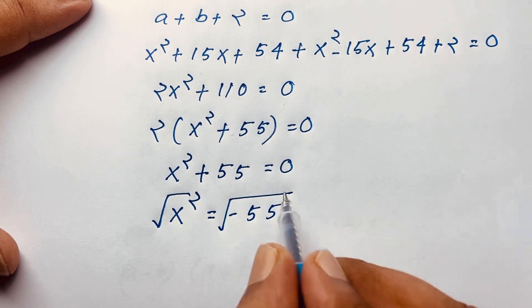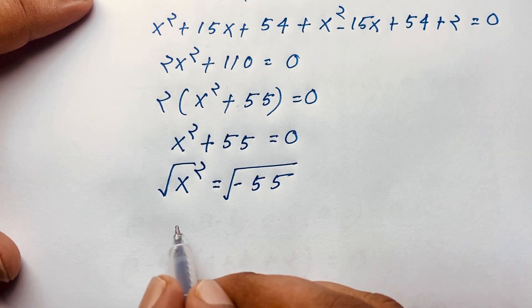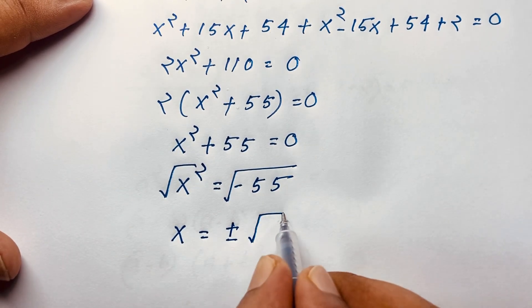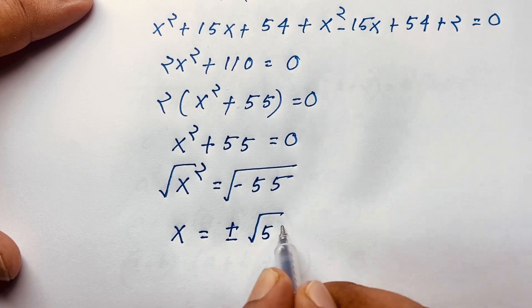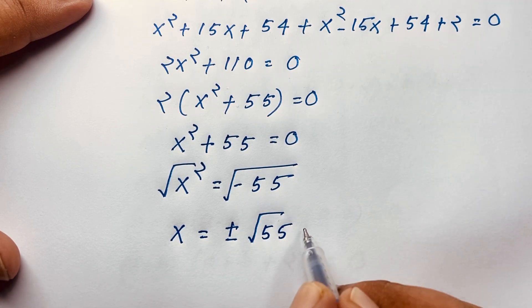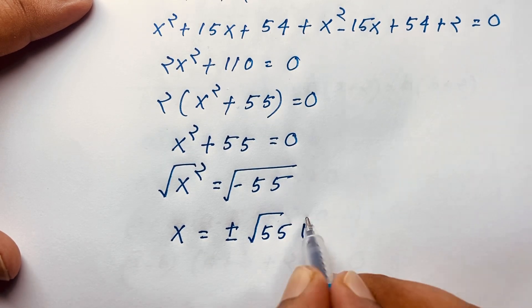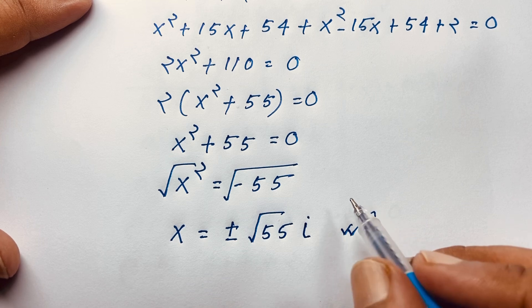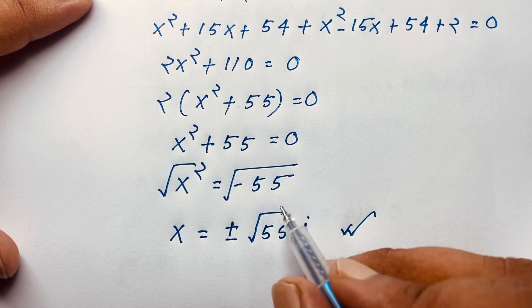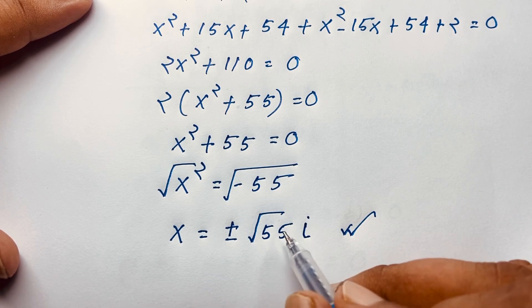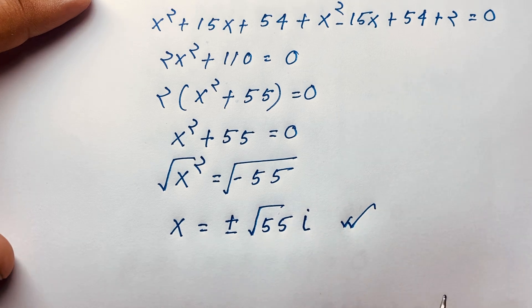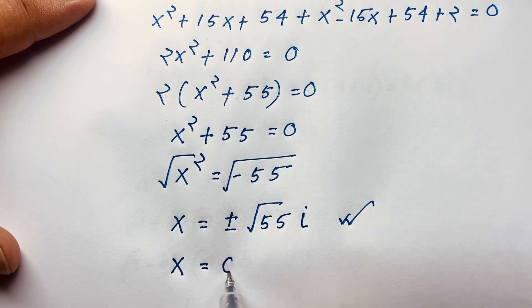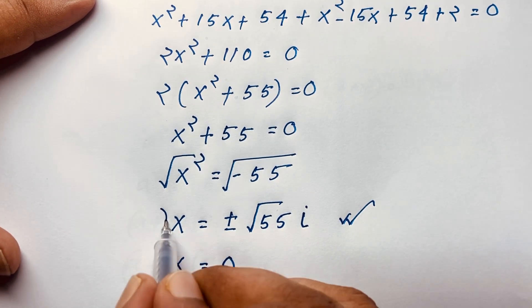Taking the square root of both sides, x = ±√(-55) = ±i√55. These are complex numbers. So we have three solutions in total: two complex solutions x = ±i√55, and one real solution x = 0.